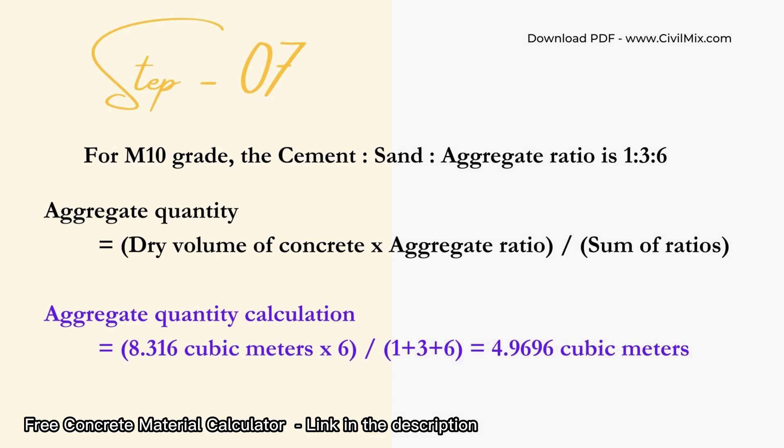The final step is to calculate the quantity of aggregate required for our concrete slab. We use the same formula as before, but this time we substitute the aggregate ratio, which is 6 for M10 grade. By substituting the values in the formula, we get the aggregate quantity required as 4.9696 cubic meters.